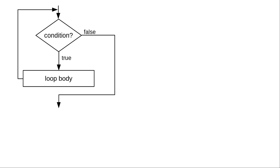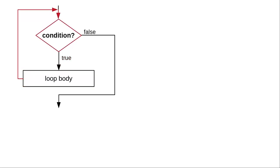Here's the flowchart of a generic while loop. It starts by testing a condition. If the condition is true, do the body of the loop, and then return to test the condition. As long as the condition is true, do the loop body and return to test the condition again. When the condition is false, the loop has concluded.